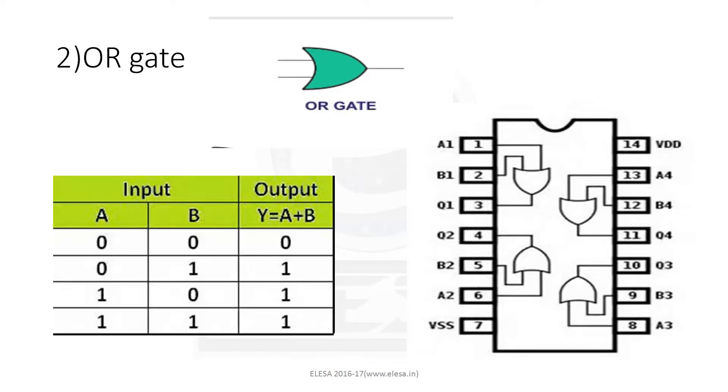Now, the basic OR gate. The logic symbol for OR gate is here. The truth table for OR gate is like this. The operation performed by OR gate is the addition of its inputs. Here, A equals 0, B equals 0, then output, that is Y equals A plus B, is 0.